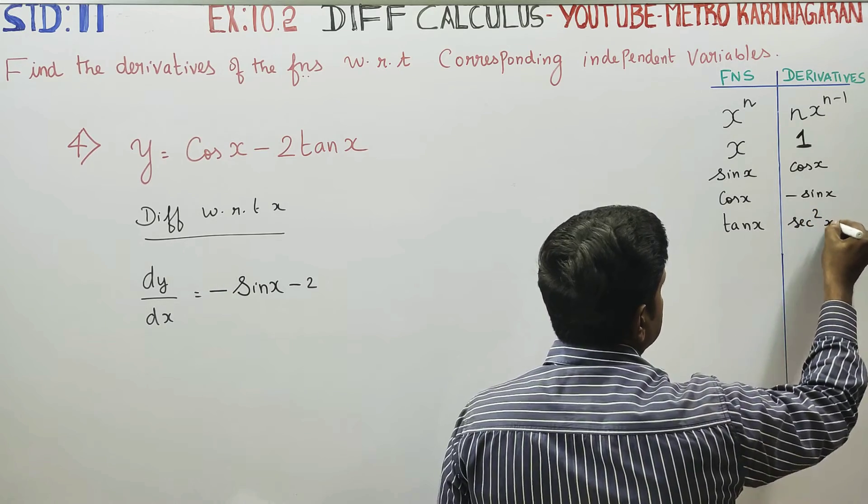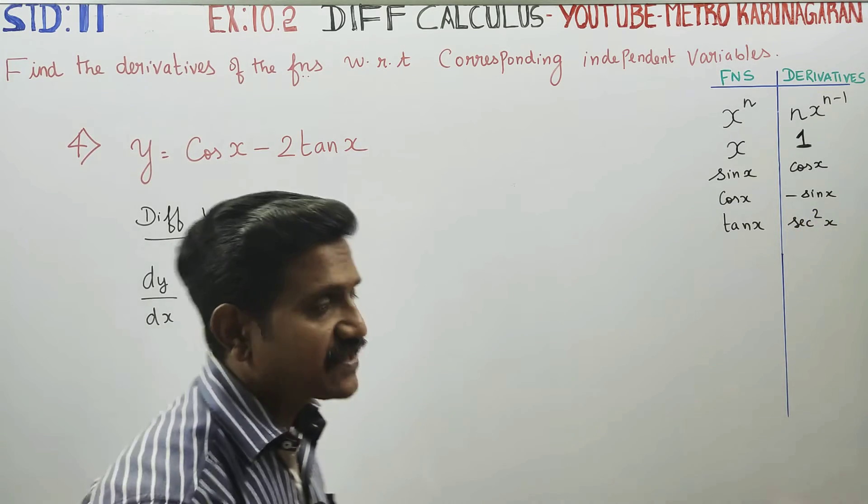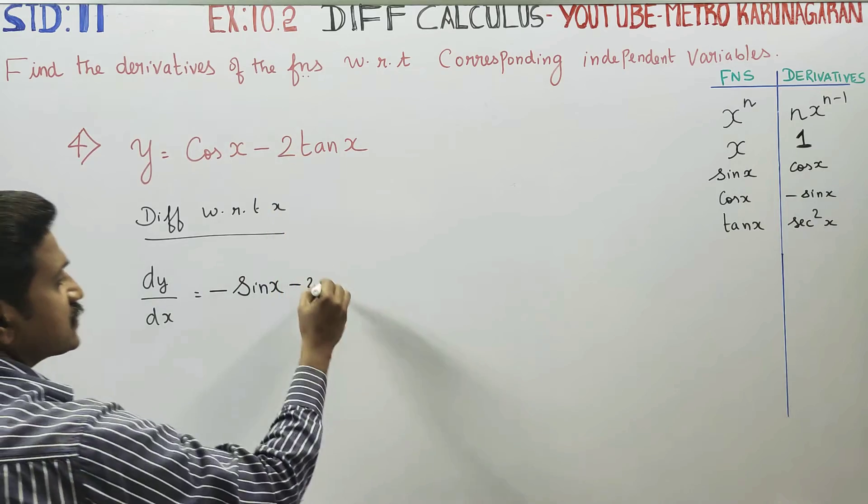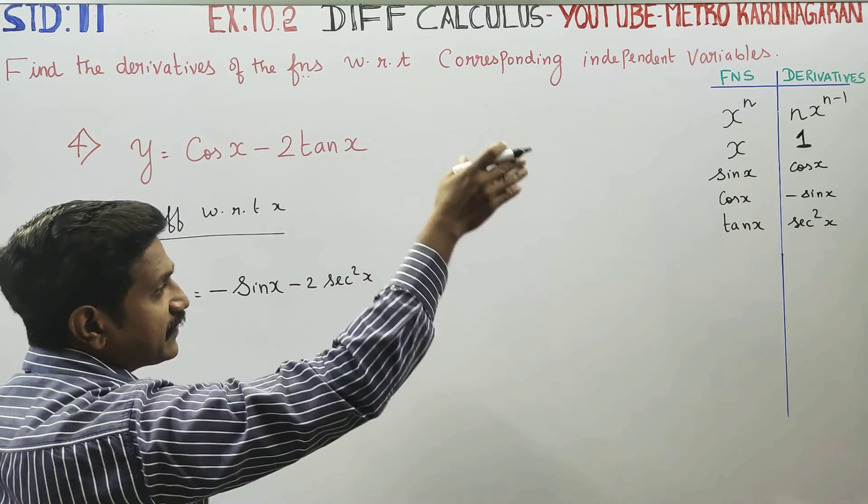Tan x differentiate pannu, you get secant square x. Anale tan x yudhu readymade answer secant square x. Nenang idhall, eadu memory pannu vandu.